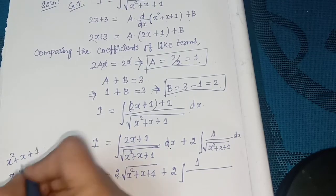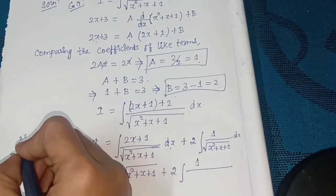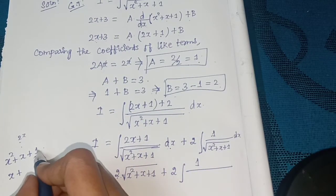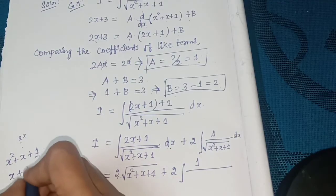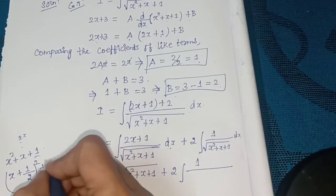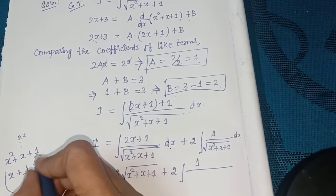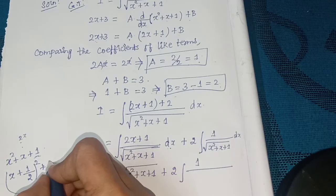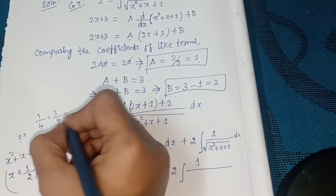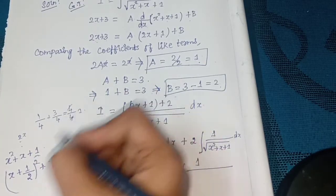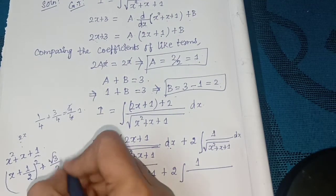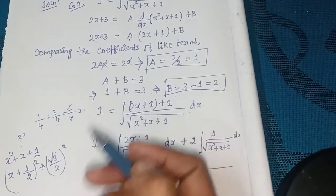For the second integral, complete the square for x² + x + 1: x² + x + 1 = (x + 1/2)² + (1 − 1/4) = (x + 1/2)² + 3/4, since 1/4 + 3/4 = 1. So x² + x + 1 = (x + 1/2)² + (√3/2)².